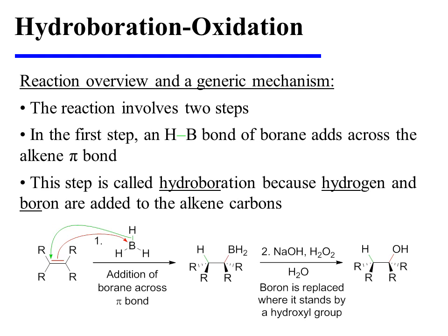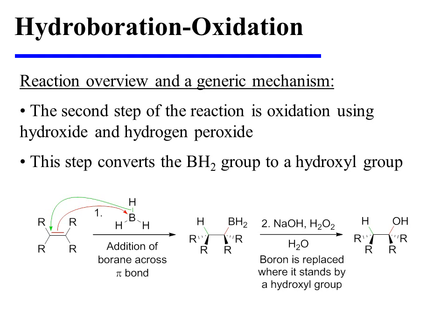The reaction involves two steps. In the first step, the hydrogen-to-boron bond of borane adds across the alkene pi bond. This step is called hydroboration because both hydrogen and boron are added across the alkene carbons. The second step is oxidation using hydrogen peroxide in basic medium, which converts the BH₂ group to a hydroxyl group.